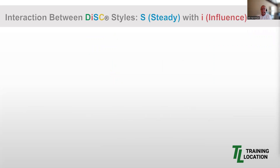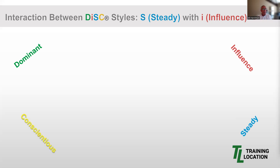Our topic today is interaction between DISC styles — the S for Steady with the I for Influence. This session is one in a series discussing the interaction between and among four DISC styles, which include Dominant, Influence, Steady, and Conscientious.